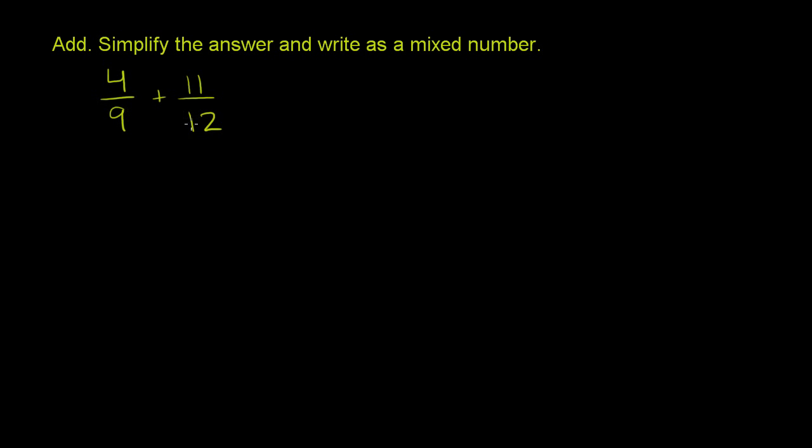So here we have two fractions. We're adding them together, but we have different denominators. So whenever you add fractions, the first thing you have to do is check the denominators. If they're the same, you can add, but if they're different like this, you have to make them have the same denominator.